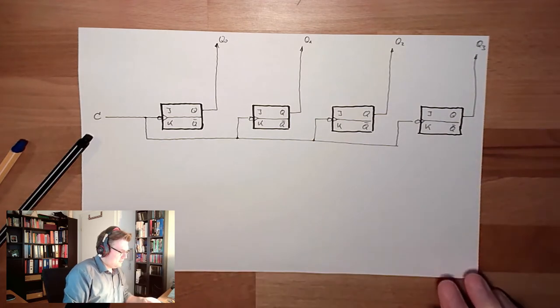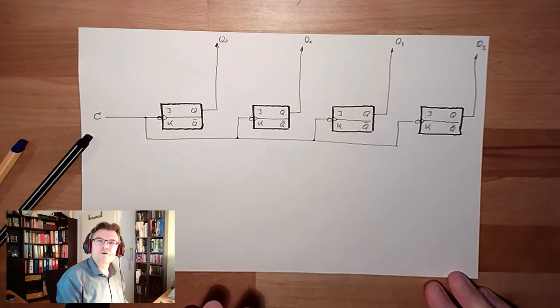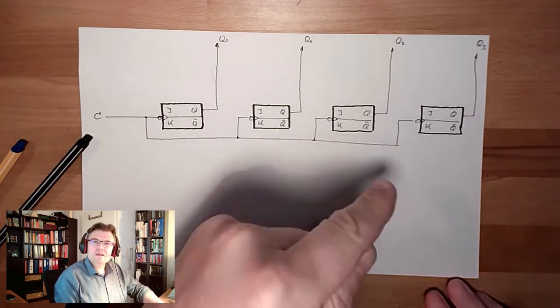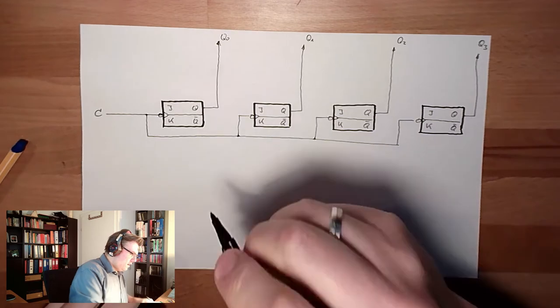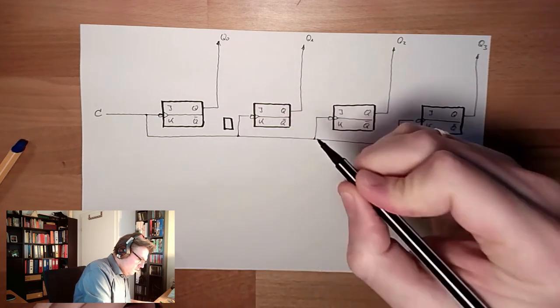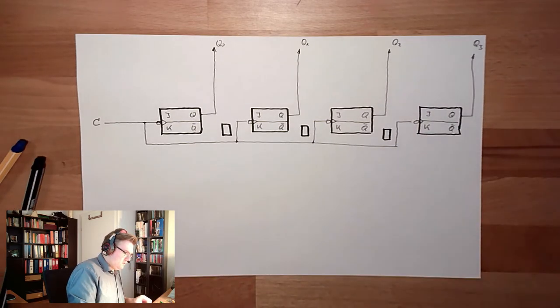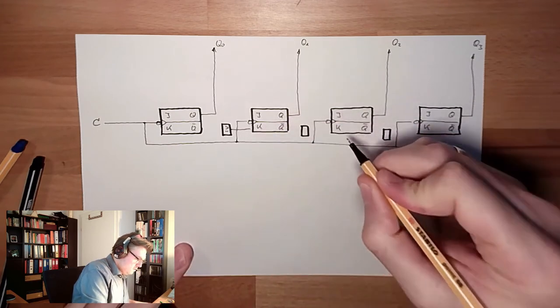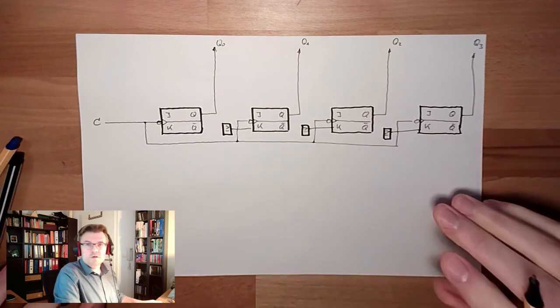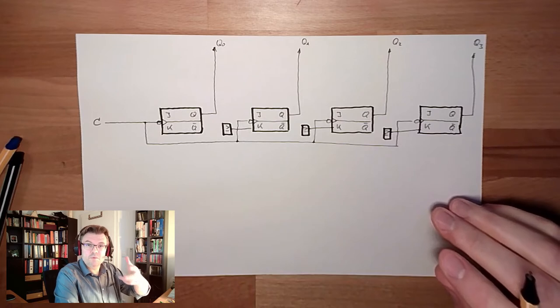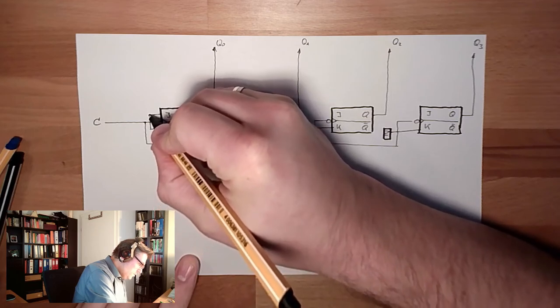But now, since I cannot use this output to toggle, I need to have some external logic which helps me decide if one should toggle or not. Here I will draw an OR. This has a meaning. We will see this afterwards. The first one shall toggle every time. The least significant bit in a binary number toggles every time. So these two, we will just set to one.